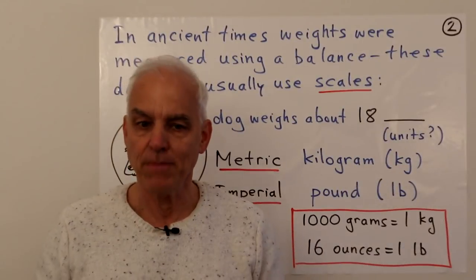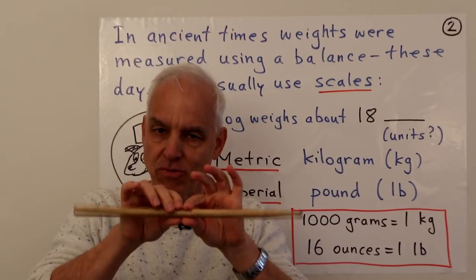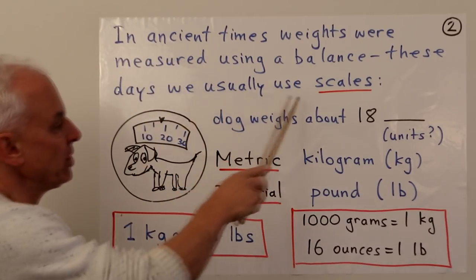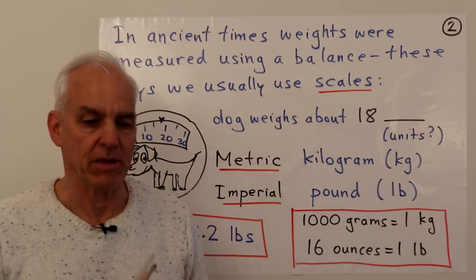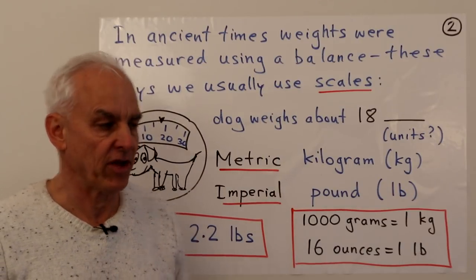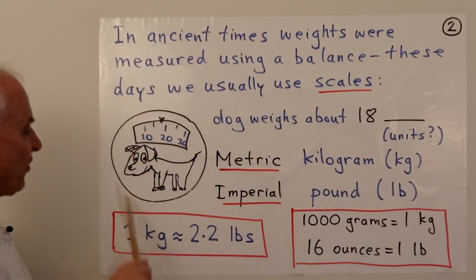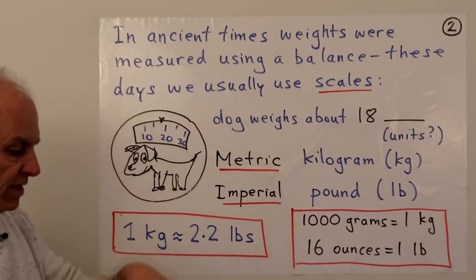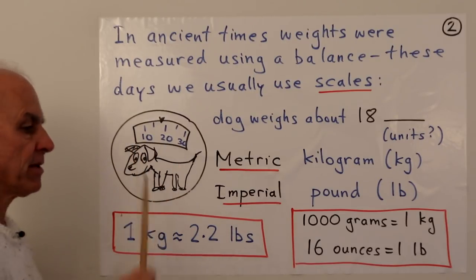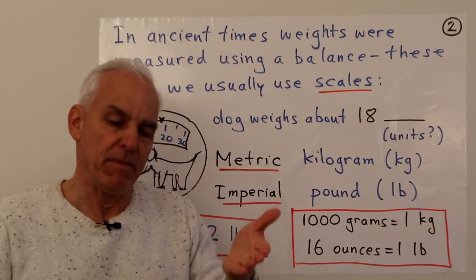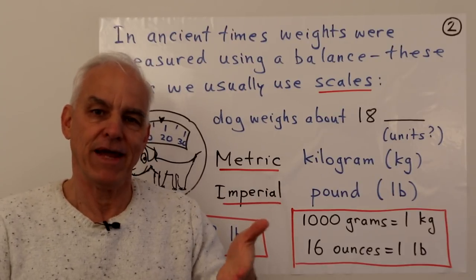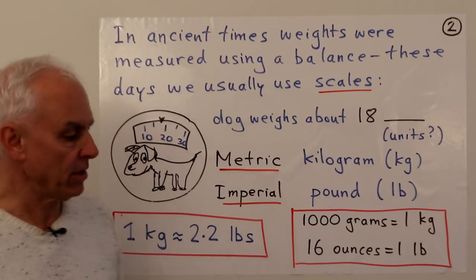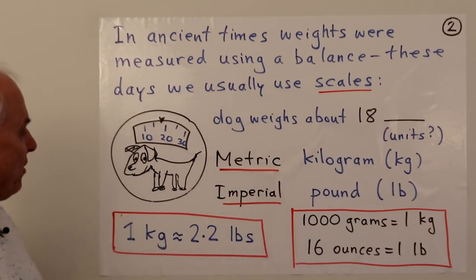In ancient times, weights would have been measured with balances, but these days we usually use scales, which are a little bit more sophisticated. Here's an example of a scale — something that sits on the ground, you put something on top of it, and there's a dial or meter that you can read to find out what the weight of the object placed on the scale is.